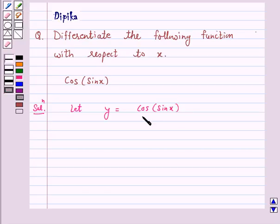Now we know that derivative of cos theta is equal to minus sin theta and derivative of sin theta is cos theta.